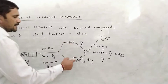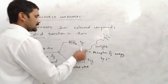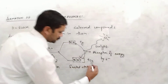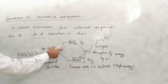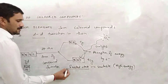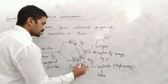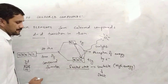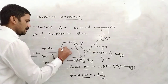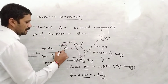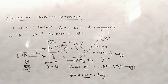When the electron is excited to the EG level (excited state), this state is unstable because the system has absorbed energy. So the electron returns to the ground state (T2G), releasing energy in the form of visible light. The wavelength of this emitted visible light corresponds to a particular color, which is what we observe in the compound. This is why transition metal compounds appear colored.